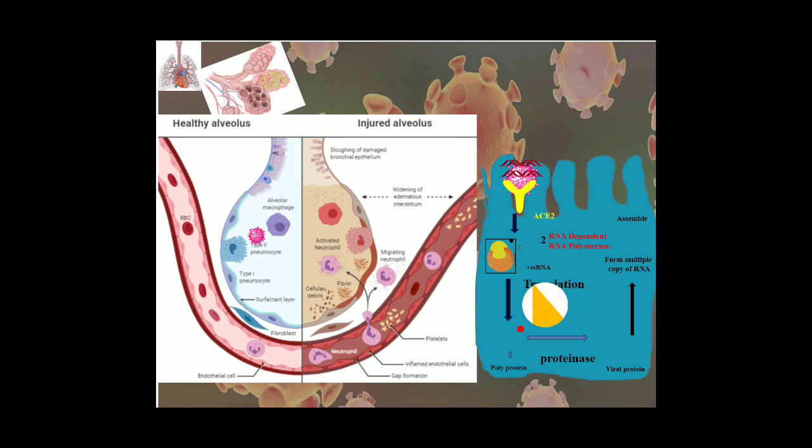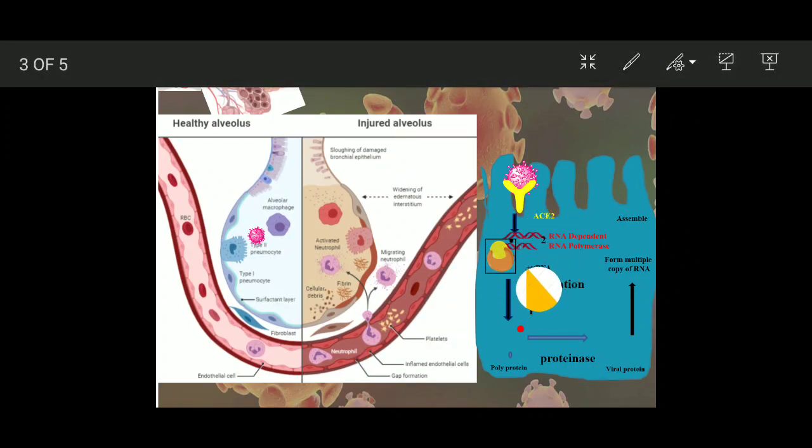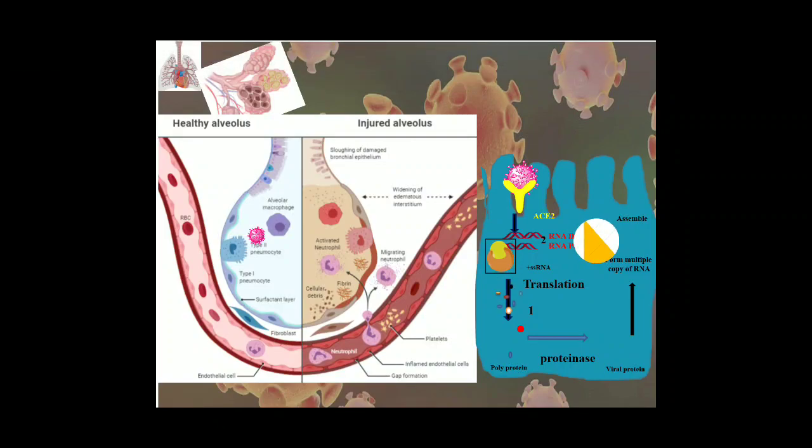So let us see how it is transferring. Here we go, this virus, the genetic material has been transferred. After transferring the genetic material, it does a few works. What are those? First, this RNA is then translated to polyprotein. And this polyprotein, by the help of proteinase, produces the viral protein. What are the viral proteins? Spike protein, M protein, N protein, HE protein that I discussed in my previous lectures.